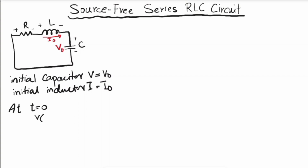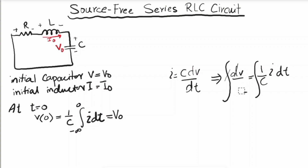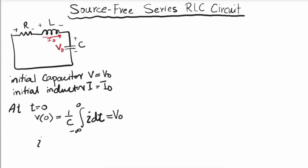The circuit is excited by the initial capacitor voltage equal to V₀ or the initial inductor current equal to I₀. At time t equals zero, the voltage is equal to one over C, integral with limits minus infinity to zero of i·dt, which equals V₀. This comes from i = C·dv/dt, so integrating both sides gives v = (1/C)∫i·dt. The current at time t equals zero is I₀.